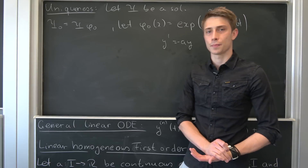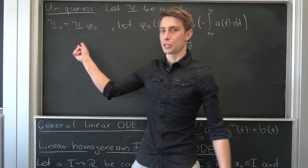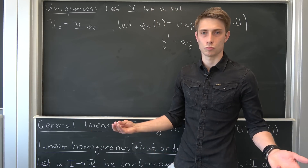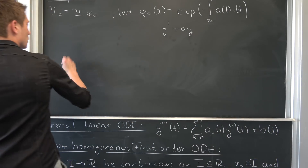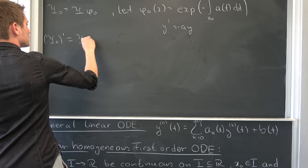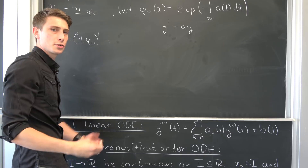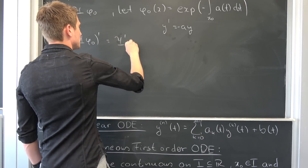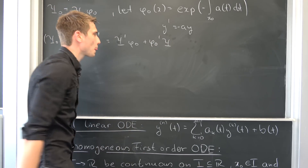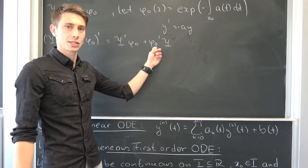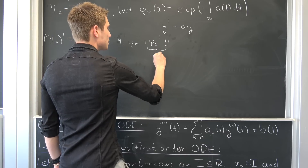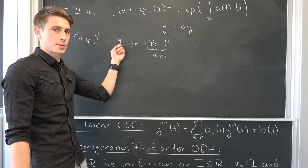So what can we do with this? We want to find out something about ψ₀, so let's differentiate it. Using the product rule, ψ₀' = ψ' · φ₀ + φ₀' · ψ. We know φ₀' is the solution to y' = −a·y, so φ₀' = −a · φ₀. And since ψ is assumed to be a solution to the original differential equation, ψ' = a · ψ.